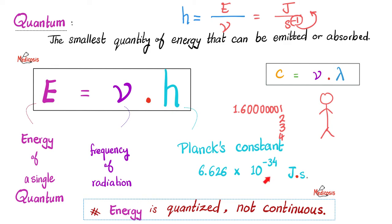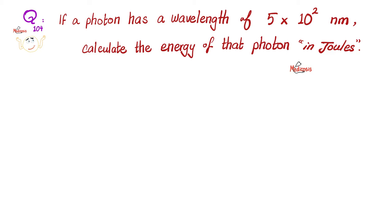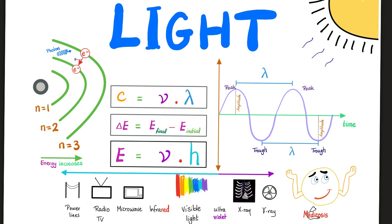Here is another question. If a photon has a wavelength of 5 times 10 to the second power nanometers, please calculate the energy of that photon in joules. Get a pen and paper, try to figure out the answer. You will find out that you will need one of these three equations, if not more than one, and you will find the correct answer in the next video. Remember, the speed of light is the frequency of light times the wavelength of light. Delta energy, or the difference in energy, is the energy final minus energy initial. And the energy of a single quantum equals the frequency of radiation multiplied by Planck's constant.